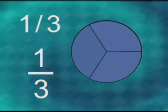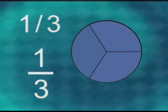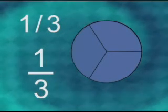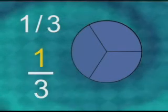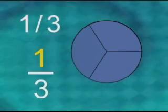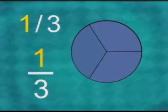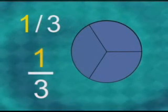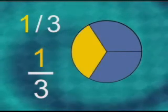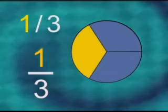The numerator is the number written on top of the bar or before the slanted line. The numerator tells you the number of parts you are observing.